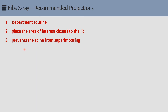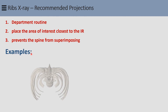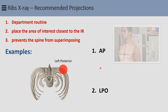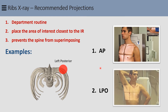For example, if a patient has a history of trauma to the left posterior ribs, the two preferred projections should be straight AP and a left posterior oblique (LPO). We choose these views because LPO will move the spinous process away from the left side and the left posterior ribs are closest and parallel to the IR. This also takes into account the angle of the ribs.